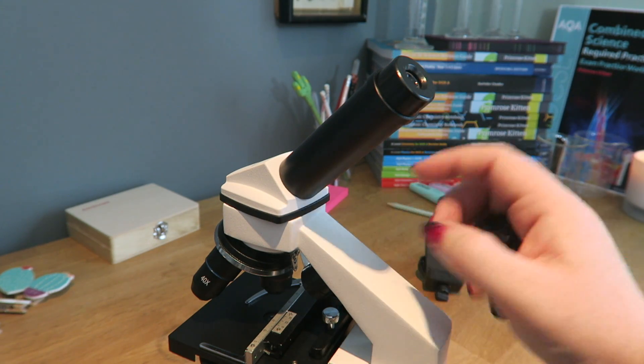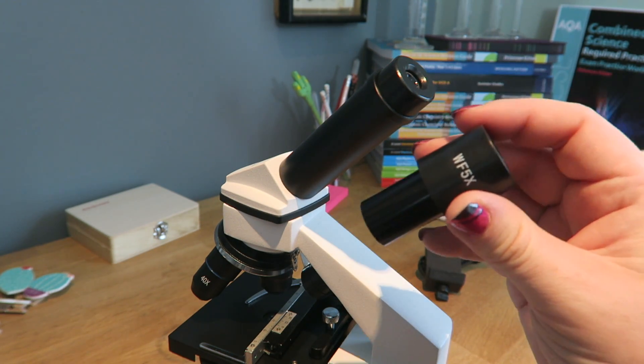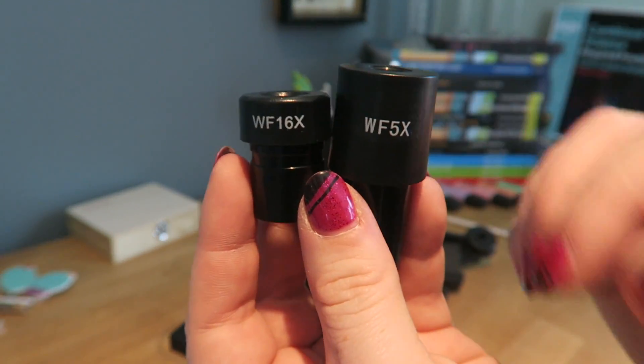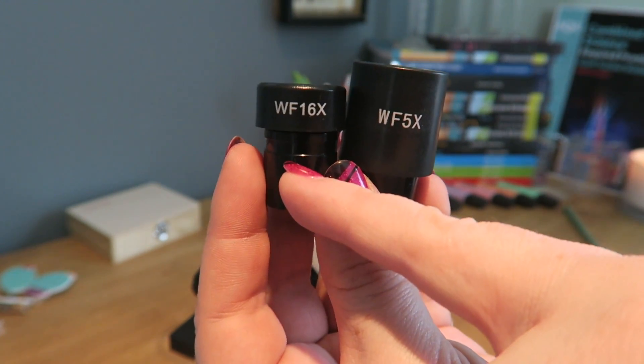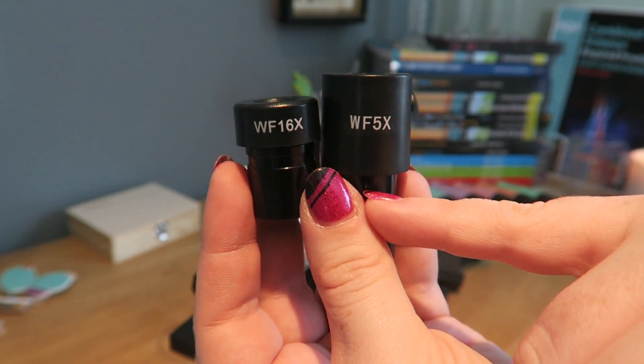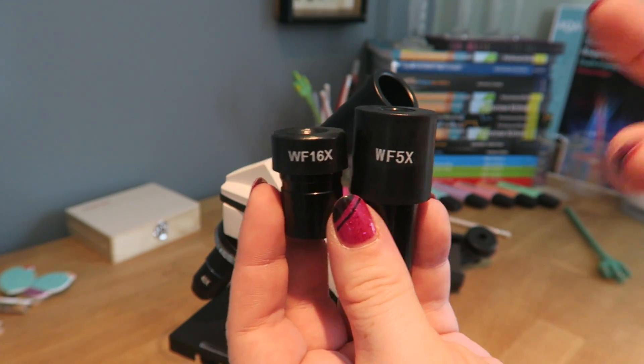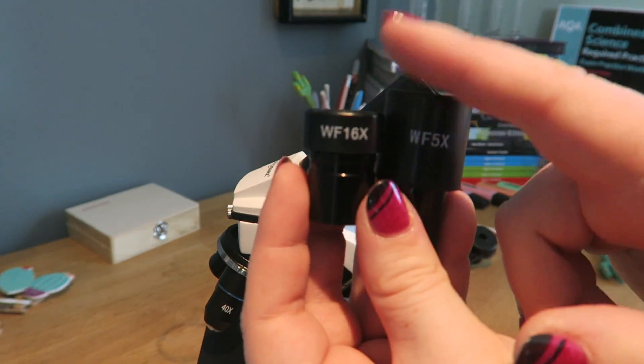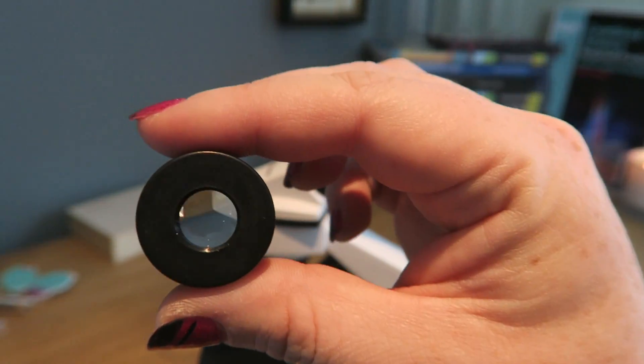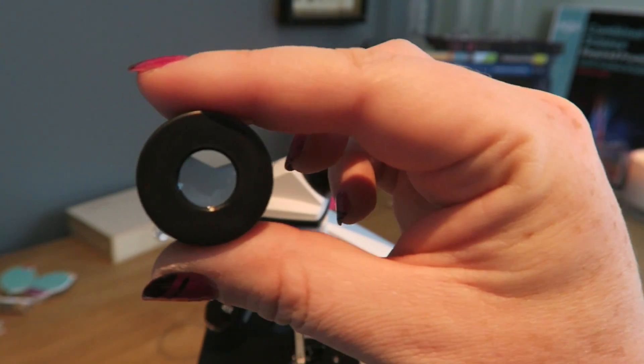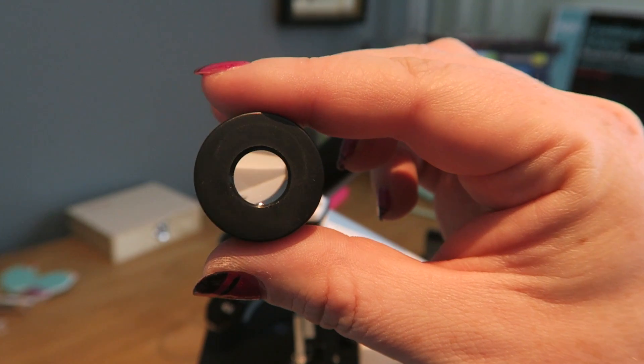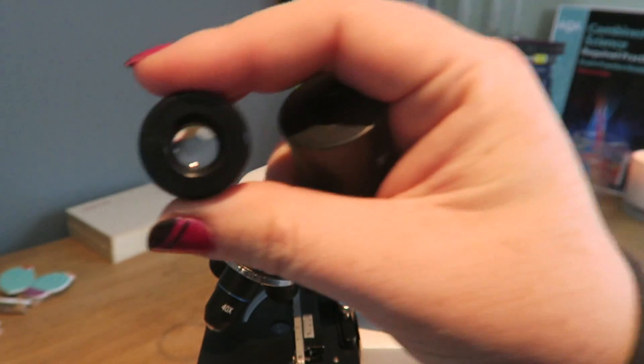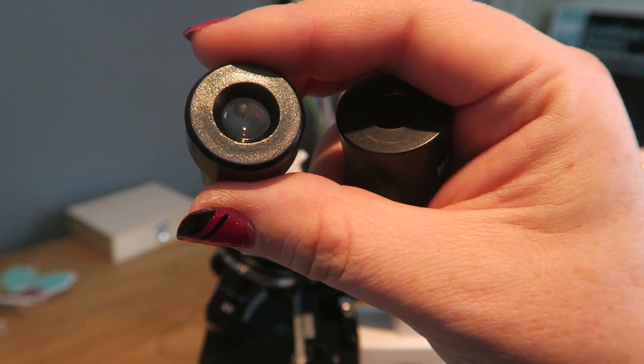This here is the eyepiece of the microscope, and most microscopes have two different eyepieces, or a number of different eyepieces, and you'll see they have magnification written on them. So this is a 16 magnifying eyepiece, and this is a five magnifying eyepiece. When you are working out magnification, you not only need to take into account this magnification down here, but magnification of the eyepiece. And this is the bit that you actually look through when you want to look at your slides.